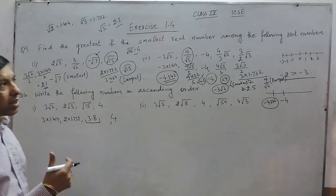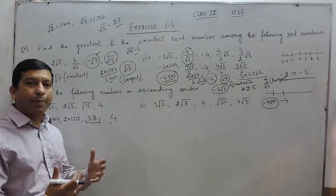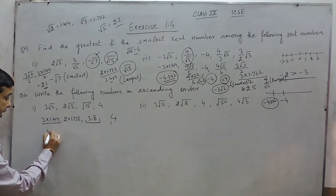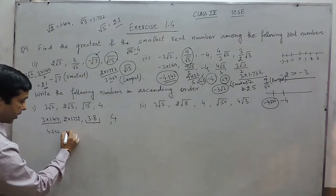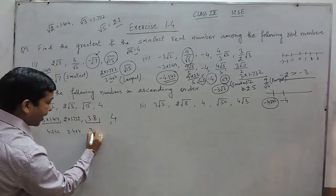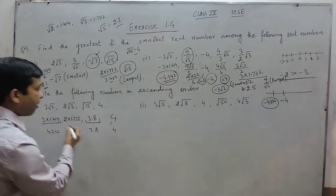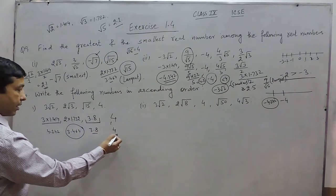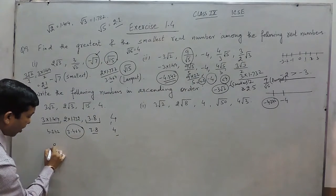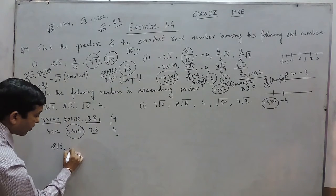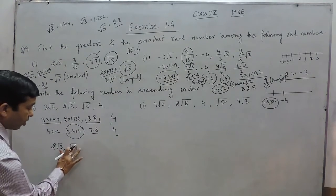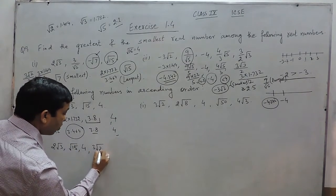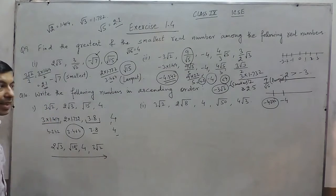In that class we have already talked about this. Solving these: 3√2 is 4.242, 2√3 is 3.464, √15 is already approximately 3.8, and 4 is 4. When we talk about ascending order, the smallest is 2√3, then √15, then 4, then 3√2. So in ascending order: 2√3, √15, 4, 3√2.